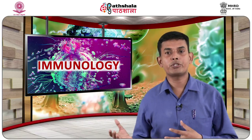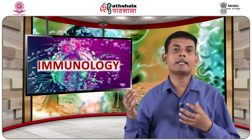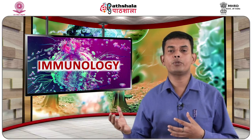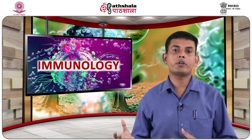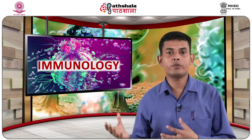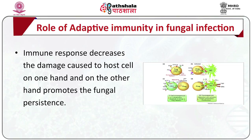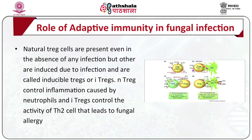The main role of the immune system is to limit and eliminate the pathogen at a cost that will restore host fitness and homeostasis of cells responsible for eliminating inflammation caused by fungal infection. It decreases the damage caused to host cells on one hand, and on the other promotes fungal persistence. T regulatory cells control inflammation caused by neutrophils, and T regulatory cells also control the activity of TH2 cells that leads to fungal allergy.